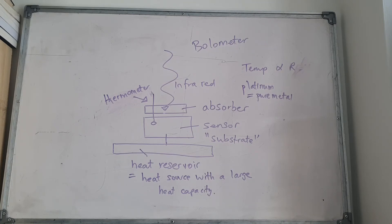A thermistor could also serve as a bolometer. The absorber could be platinum metal, and in the earliest bolometers in history, they used to be made of a thin black platinum metal.